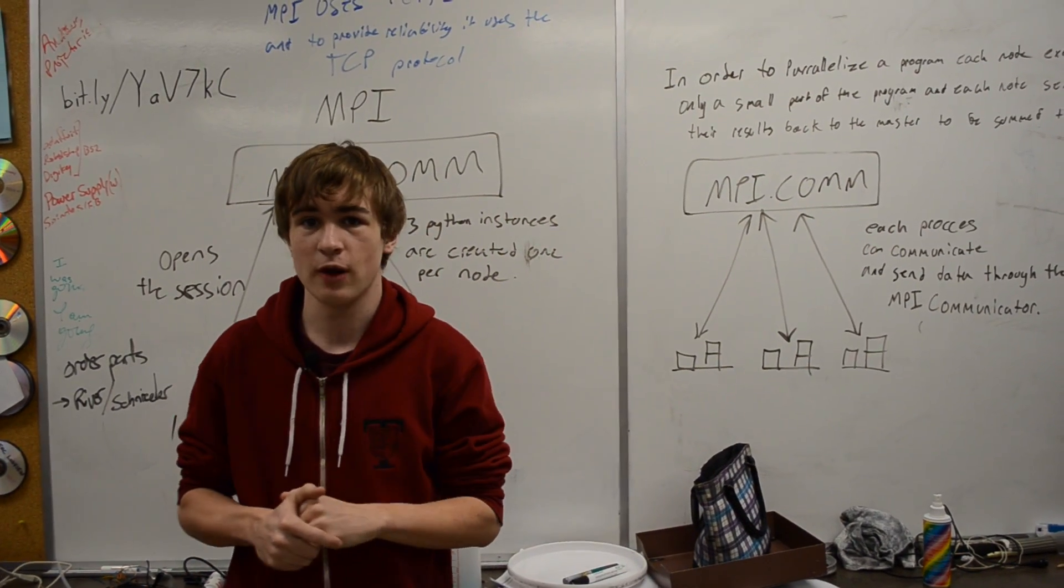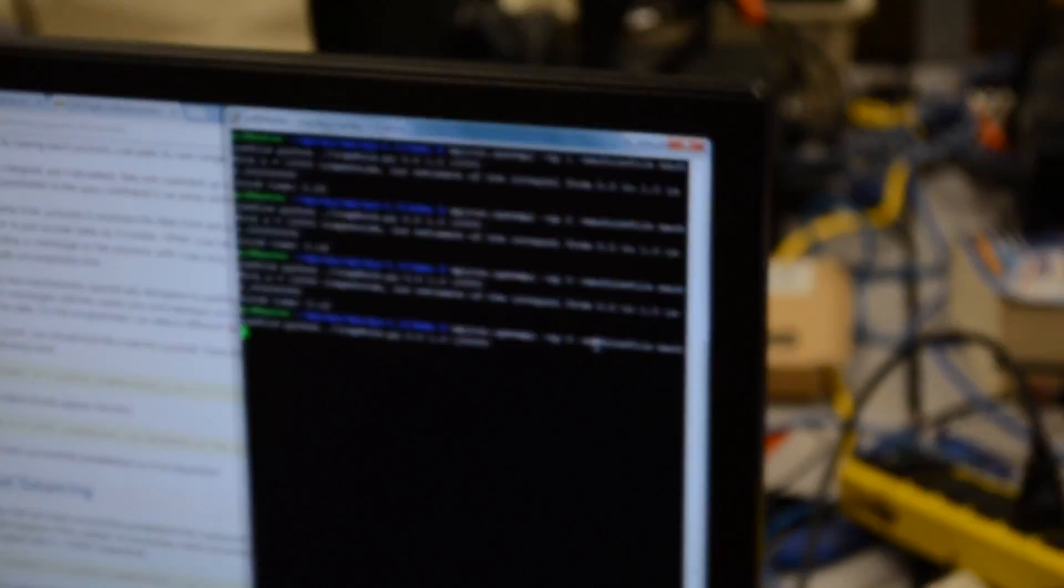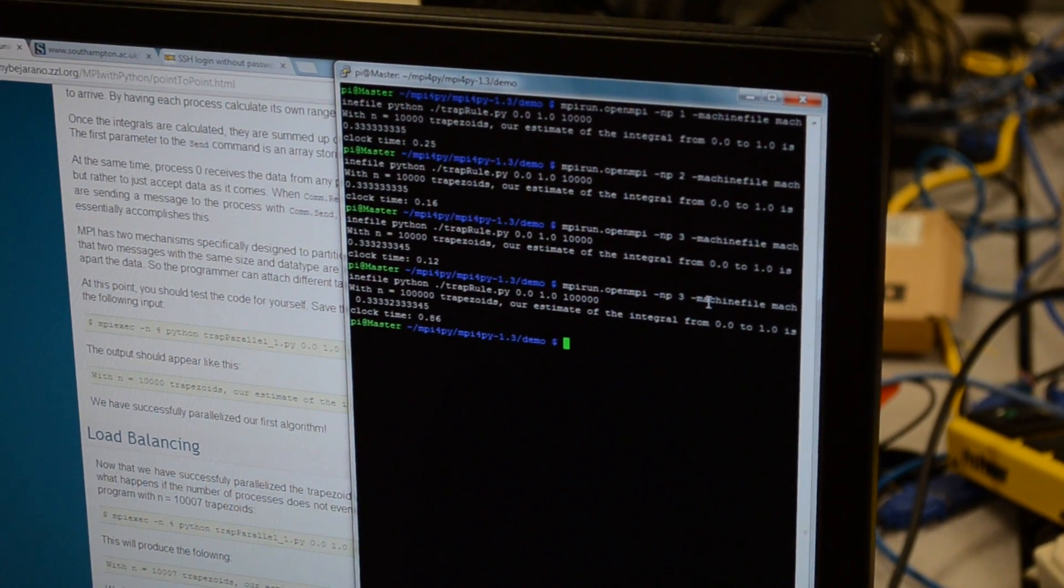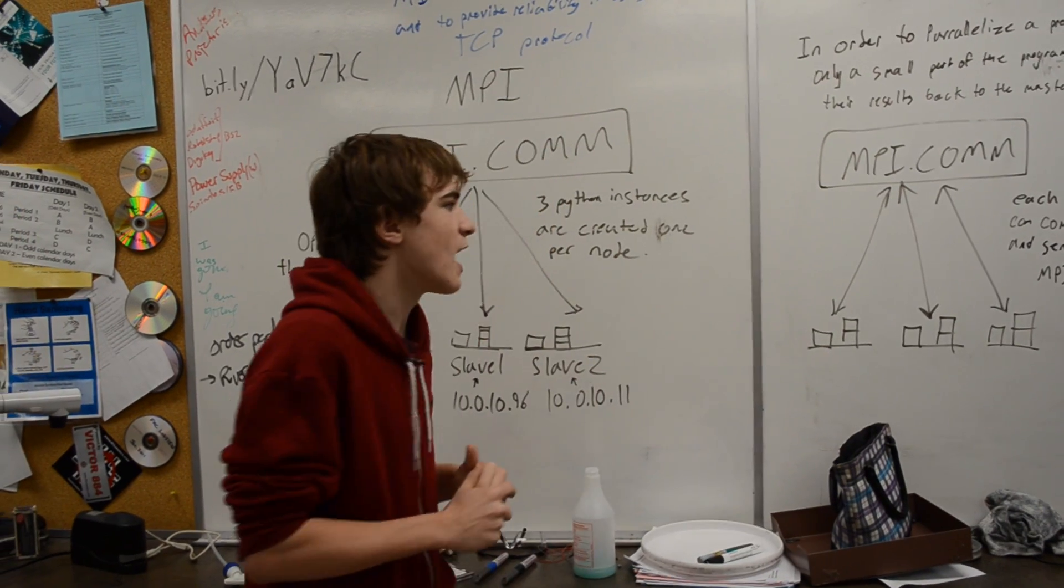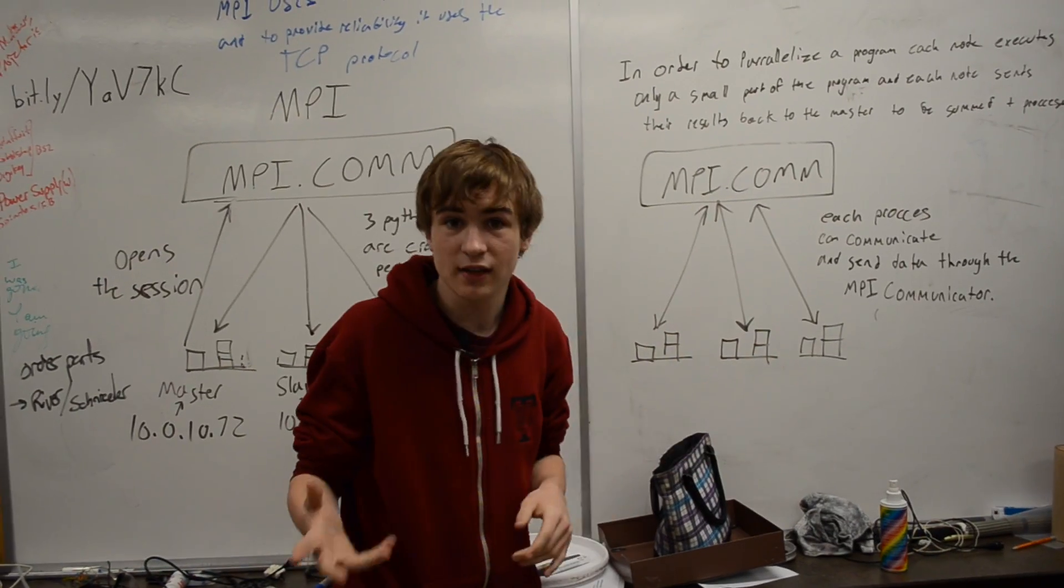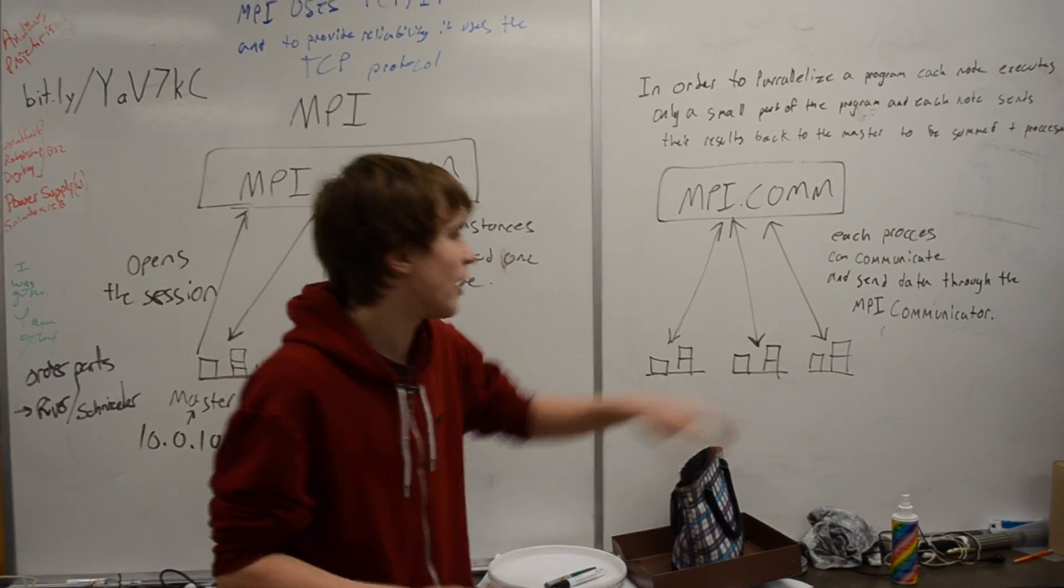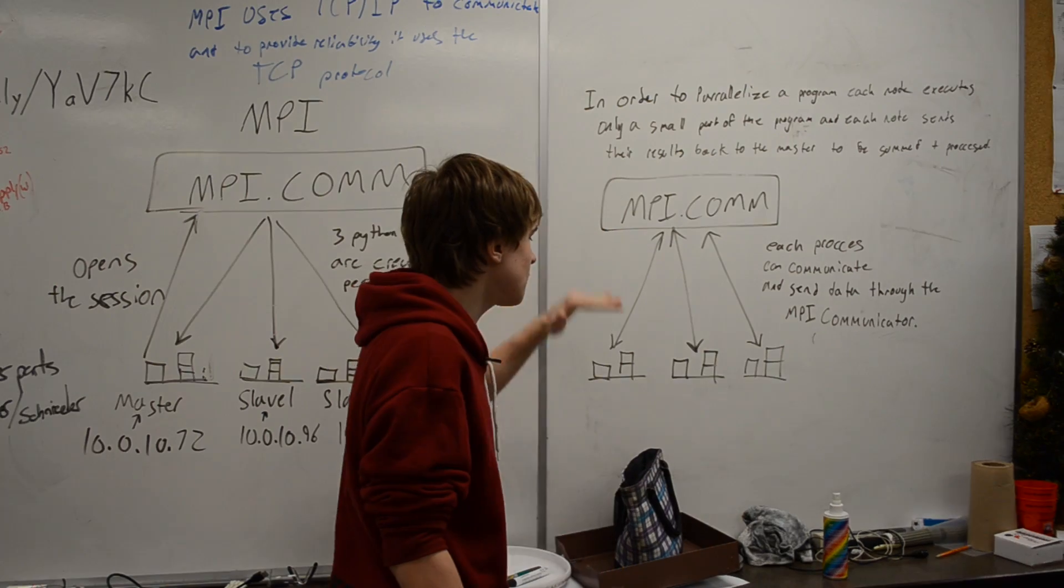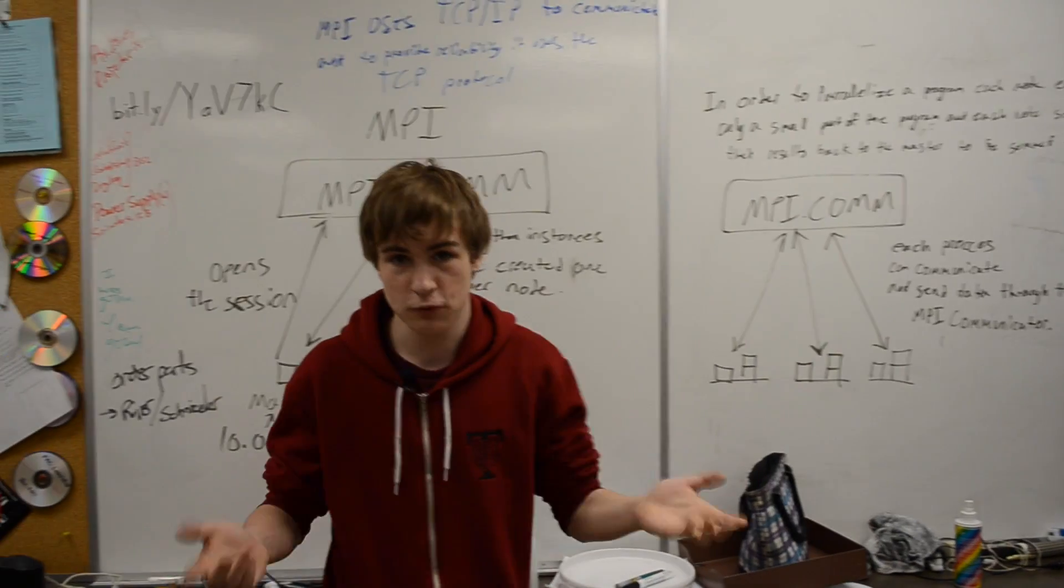So, how a normal MPI program works is each one takes a portion of the calculation, or a set number of lines of code that you've pre-written, and then once it calculates it, and once it's finished whatever calculation you've required, it sends the information through the MPI communicator back to the master node, which prints a result.